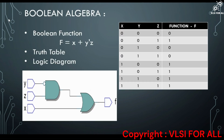Next, check whether AC plus ABC = AC is true or false. Taking AC as common: AC(1 plus B) = AC. Since 1 plus B = 1, AC = AC, hence the given equation is true. After getting a reduced function, we write a truth table. Using the truth table, we draw a logic diagram. For example, for F = X plus ȲZ, we write a truth table with inputs X, Y, Z and output F, then draw the logic circuit accordingly.